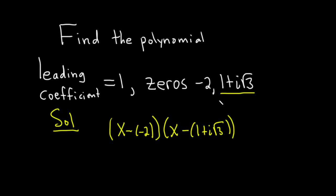Also, we know that whenever you have a complex number that's a zero, its conjugate is also a zero. So in this case, 1 minus i square root of 3 is going to be a zero. So that means that x minus 1 minus i square root of 3 is also a factor.